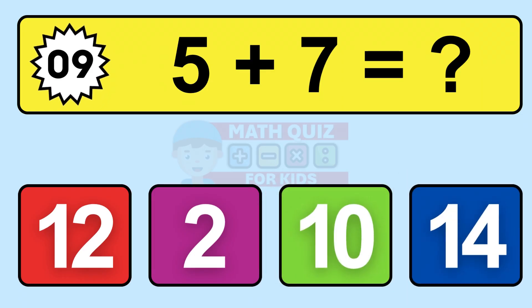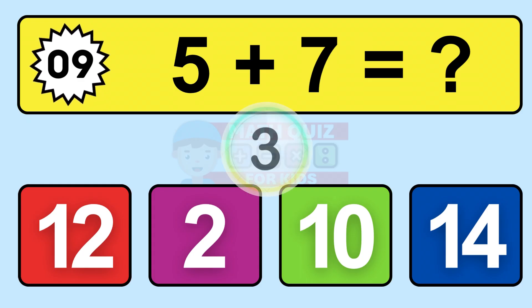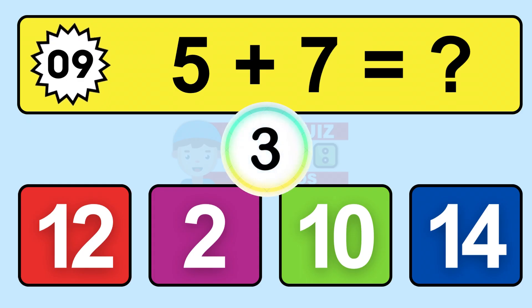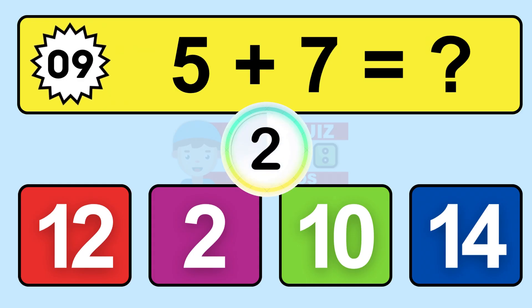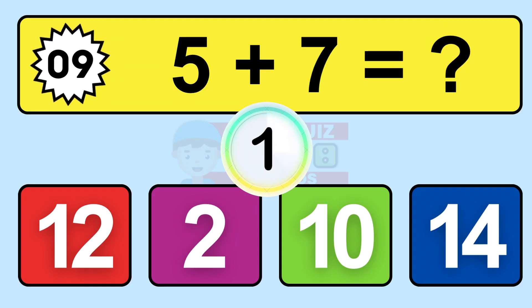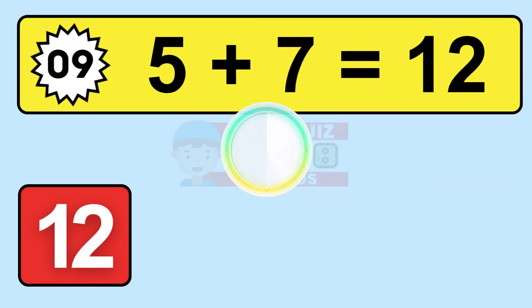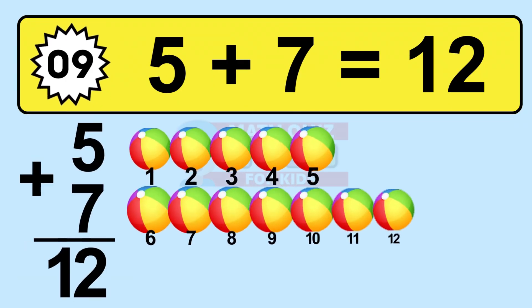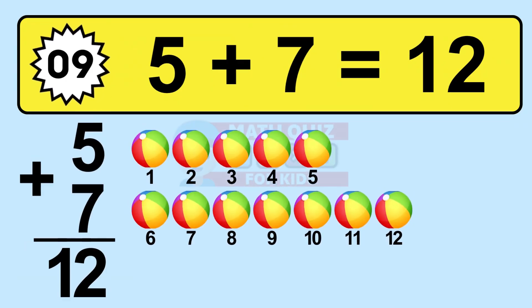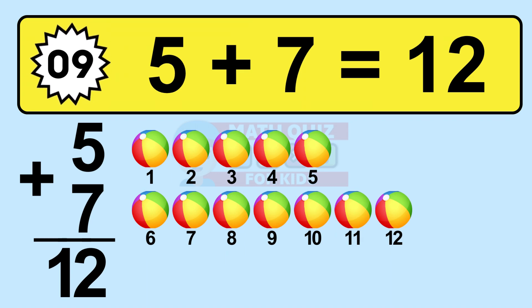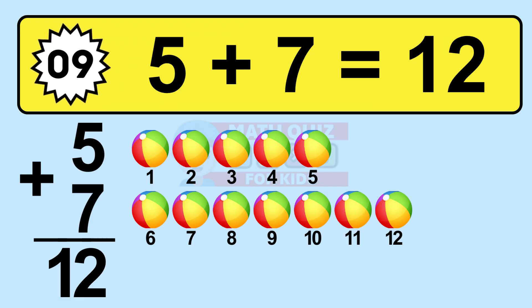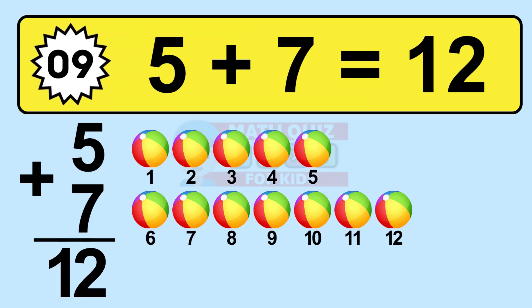Question nine: 5 plus 7 equals what? So the answer is 5 plus 7 is 12. Let's count it. 1, 2, 3, 4, 5, 6, 7, 8, 9, 10, 11, 12.